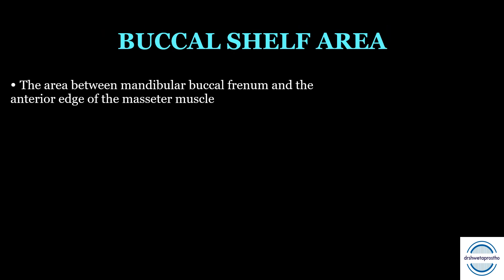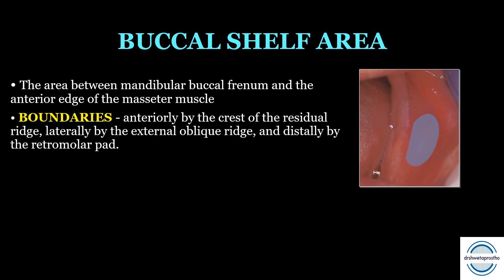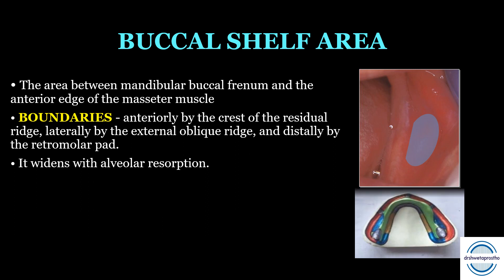The buccal shelf area is the primary supporting area. It is the area between the mandibular buccal frenum and the anterior edge of the masseter muscle. Its boundaries are: anteriorly — the crest of the residual ridge; laterally — the external oblique ridge; distally — the retromolar pad. It widens with alveolar resorption. We can see the blue colored part in the cast as the buccal shelf area.